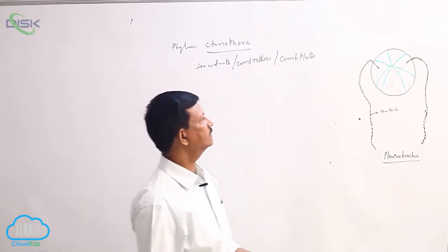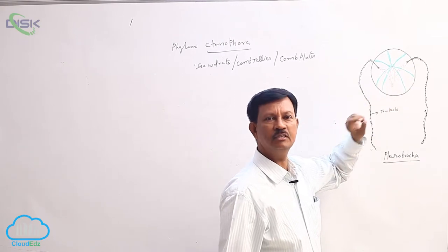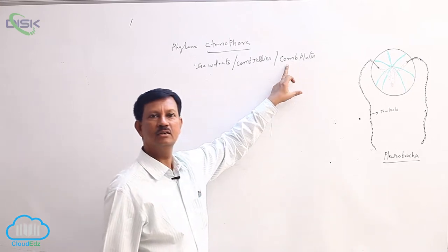Comb plates are present on the body which help in locomotion. Due to the presence of comb plates, these are commonly known as comb jellies.